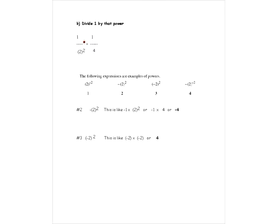The next one is negative 2 to the exponent 2. The minus in front means: take 2, raise it to the exponent 2, then make the whole answer negative. You can also think of it as minus 1 times 2 to the exponent 2. Since 2 to the 2 is 4, it's minus 1 times 4, which is minus 4.